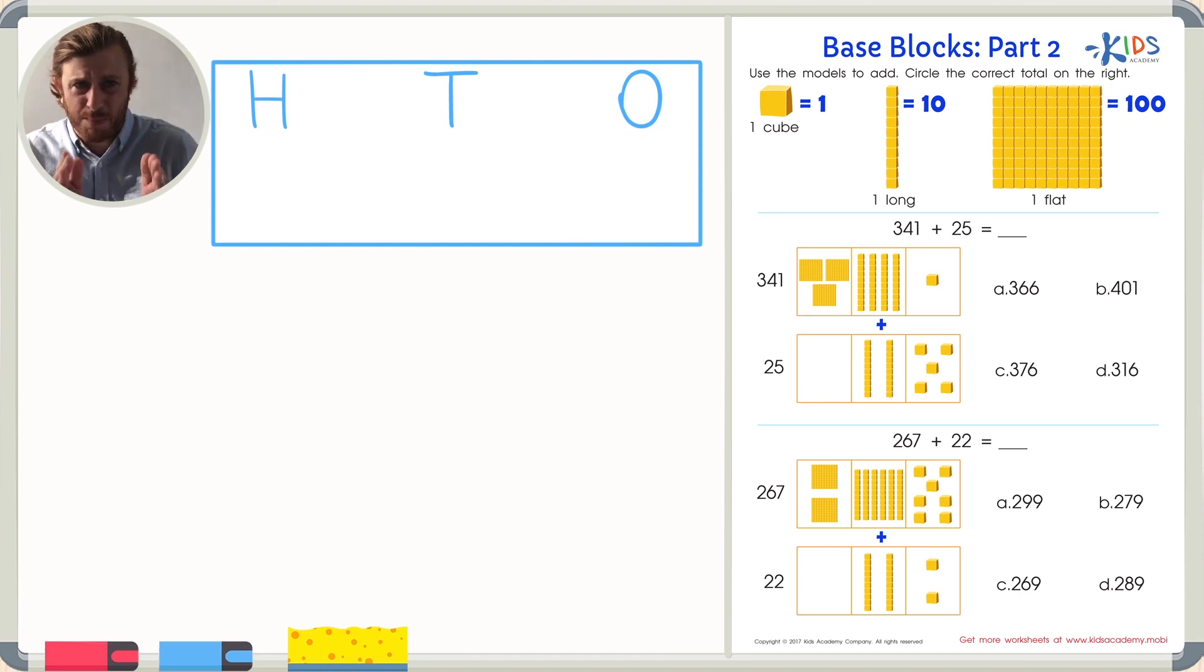A T for the tens place. And an H for the hundreds place. Now, let's count each place separately. First, in the number 341, I know that there's one. We see one cube. In the number 25, there are five ones. Instead of adding one plus five, let's just count the ones as one group together. So we'll start with the one, two, three, four, five, six. All together, there are six ones.